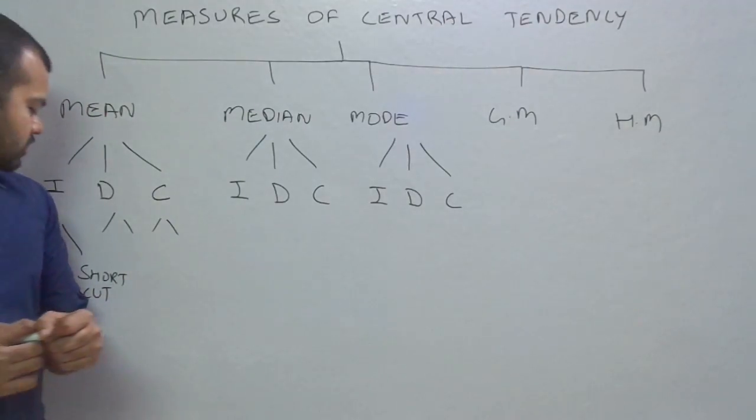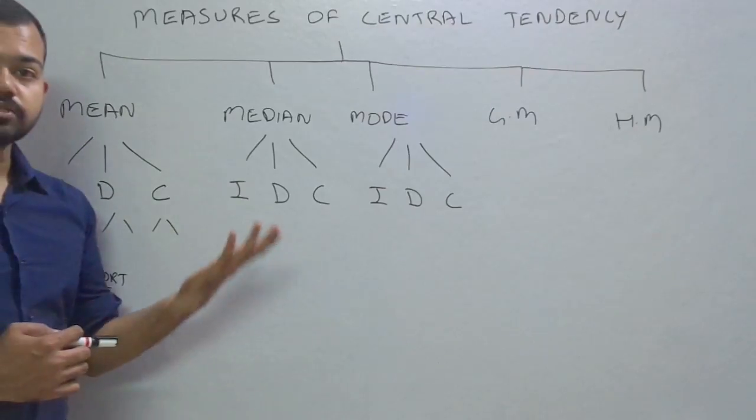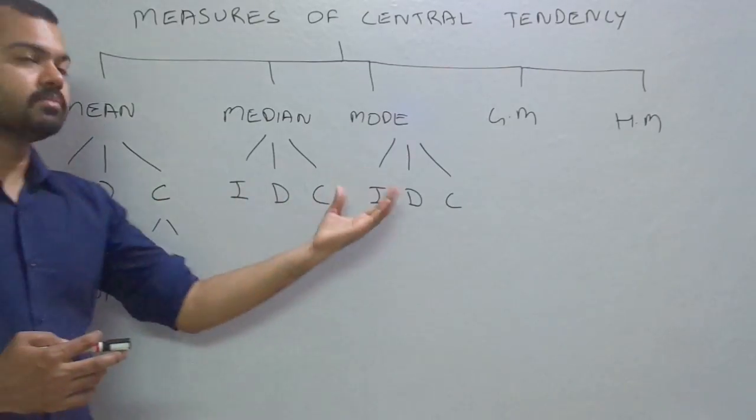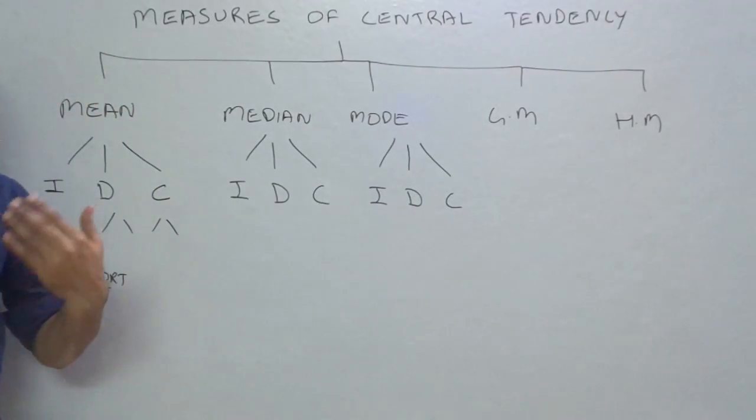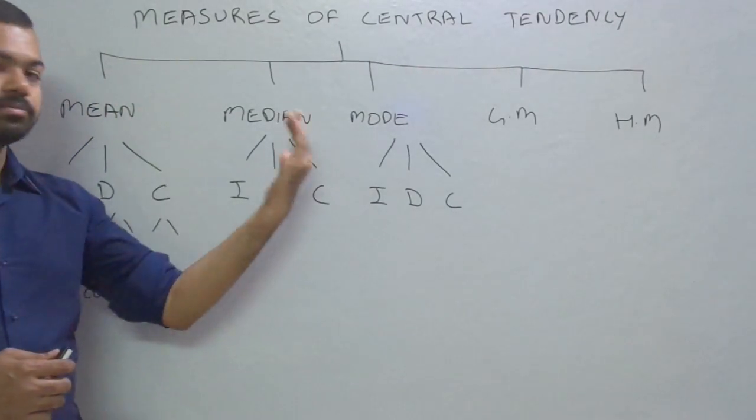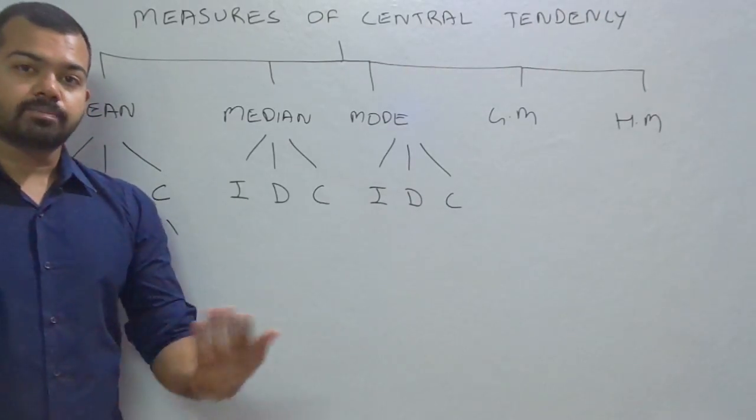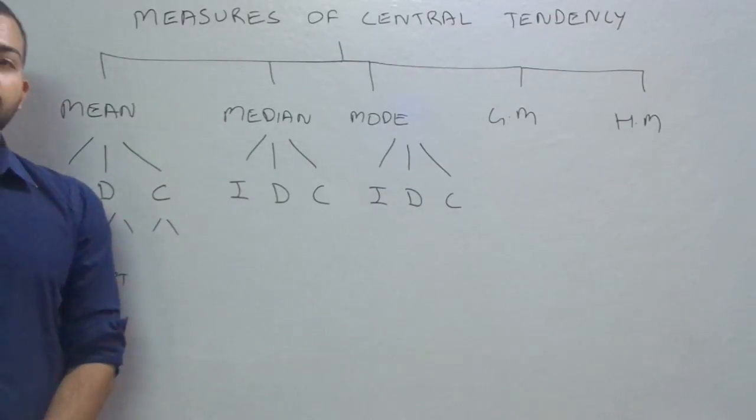We will look at how to calculate these questions. We'll do one question for each method via direct and shortcut, then discrete series, then continuous series. We will complete mean, median, and mode. Geometric mean and harmonic mean will be covered in upcoming videos. Hope you like this video and please see the next videos. Thank you so much.